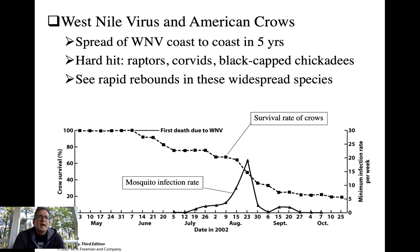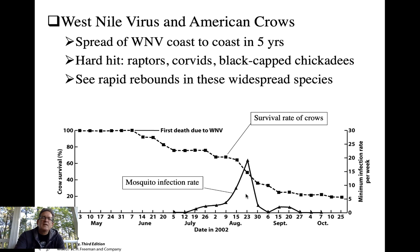A few years ago we had a big spread of West Nile virus — a novel virus from Africa — that killed lots of birds in North America, hitting corvids, raptors, and chickadees particularly hard. Data from American crows shows that survival greatly decreased, particularly as the mosquito infection rate increased, until there were very low survival rates of crows for a number of years.